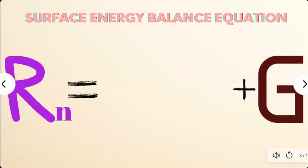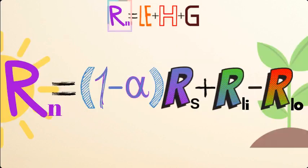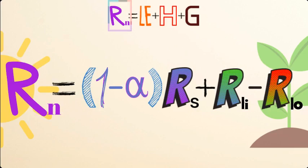Let's take a look at each individual term. First off, on the left-hand side, Rn — net radiation. Net radiation is simply the sum of all incoming and outgoing radiation fluxes at the land surface. This is typically the largest term in the surface energy balance equation. Mathematically, the net radiation looks something like this: Rn equals the quantity of 1 minus alpha, times Rs, plus Rli, minus Rlo.